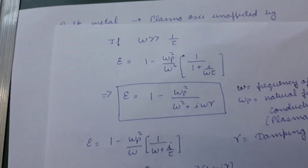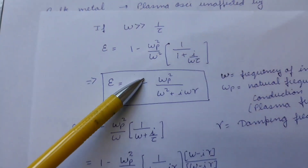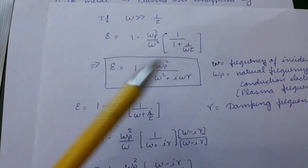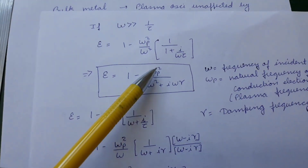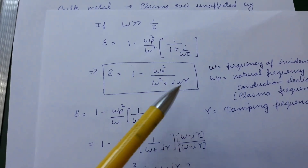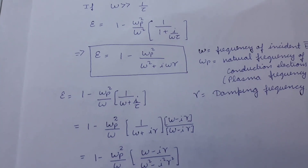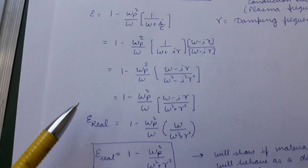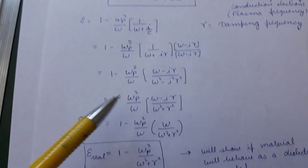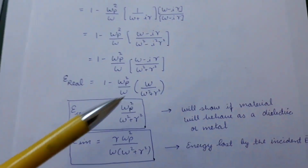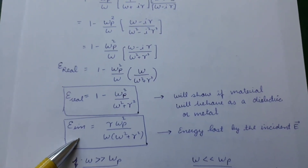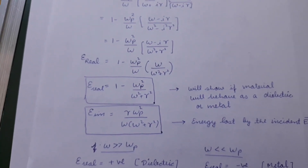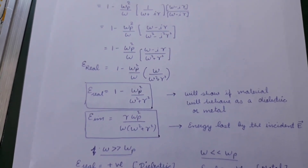When ω is much greater than 1/τ, we get a simplified permittivity. This relation can be found in the book by Rogers and Adams, written in terms of fₚ, f, and γ — you can compare those two equations. From this expression, the real and imaginary parts can be extracted, and these will give us a lot of information about how an incident photon behaves when it strikes a metal: whether it is reflected, absorbed, or transmitted.